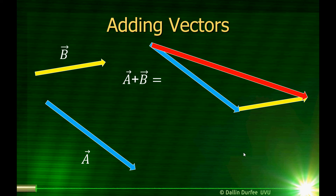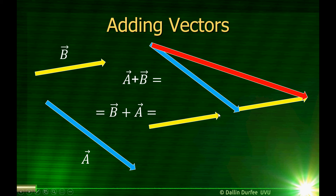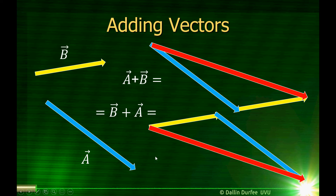It turns out that adding vectors commutes. If I wanted to find A plus B, I get the same thing if I calculate B plus A. Here I take B and place the A vector at the end of the B vector, and the two of them together make this red arrow, which is the same as that red arrow up there. So A plus B equals B plus A if A and B are vectors.